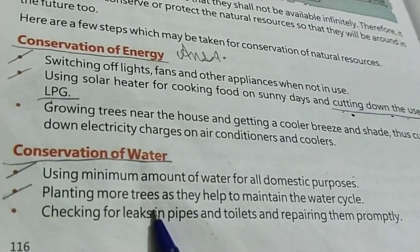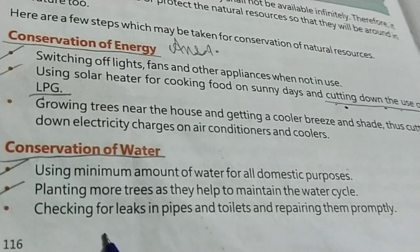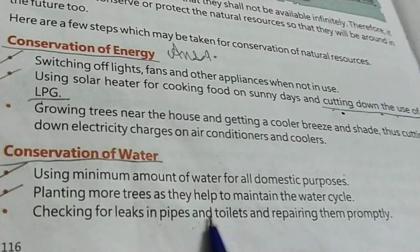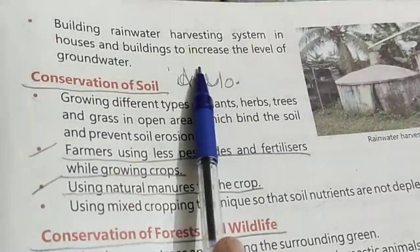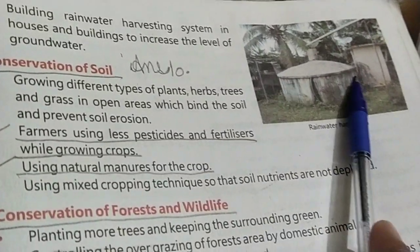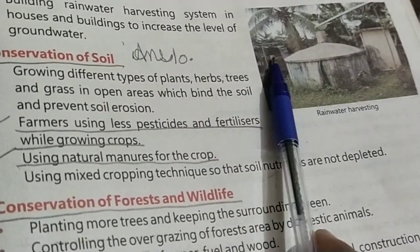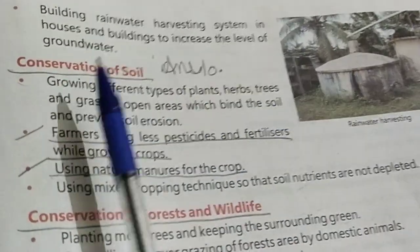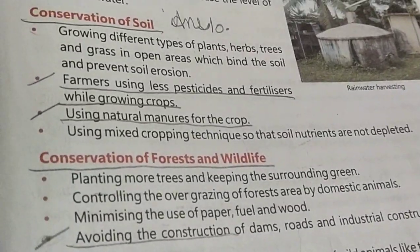We should plant more trees because they help to maintain the water cycle. We should also check pipes for any leakage and repair them as soon as possible. We should build rainwater harvesting systems in houses and buildings to increase the level of groundwater. In a rainwater harvesting system, a tank is formed and when rain comes, water is deposited there to raise groundwater levels.